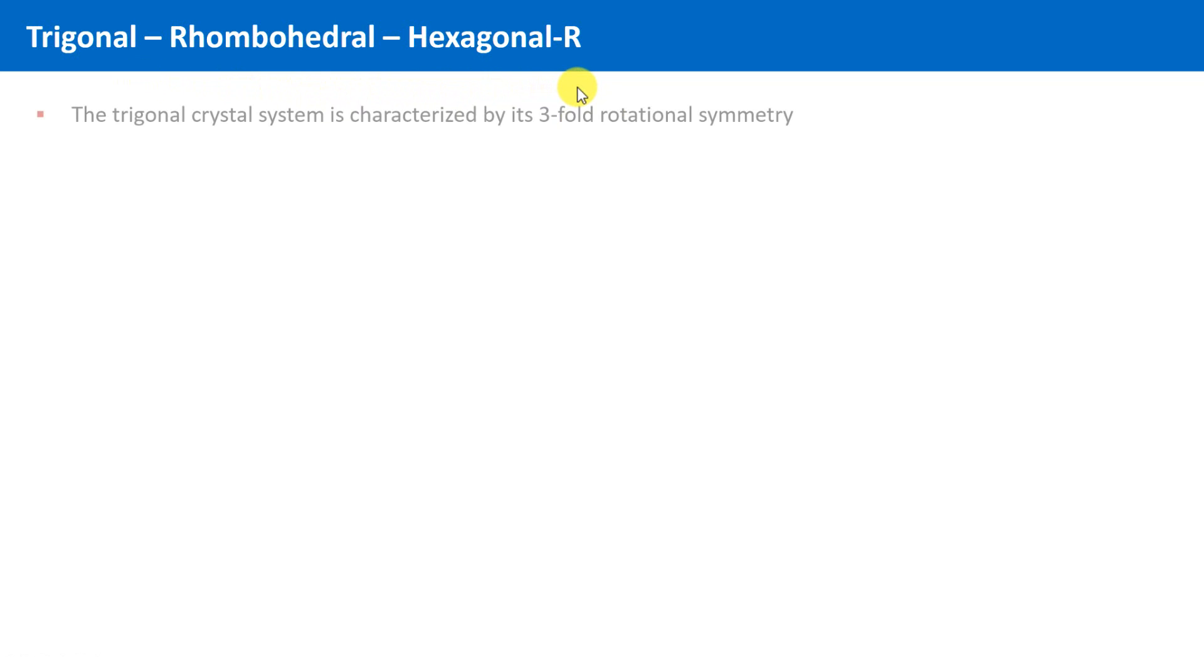Let's start. The trigonal crystal system is one of the seven crystal systems. It is characterized by its threefold rotational symmetry.